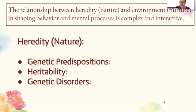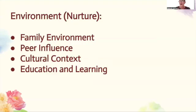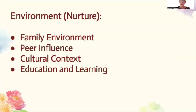Now we're going to look at environment, which is our nurture. Environment encompasses all the external influences we're in contact with from birth onward. First is family environment — parenting style, socioeconomic status, and family dynamics all play a real role in shaping behavior and mental processes. A supportive, nurturing environment tends to foster positive social behaviors in children. Second is peer influence — peers and social groups impact our behavior and attitudes. Peer pressure and friendships can affect academic performance, risk-taking behavior, and many more things.